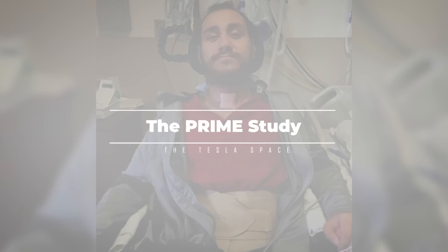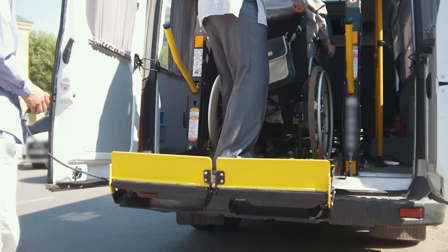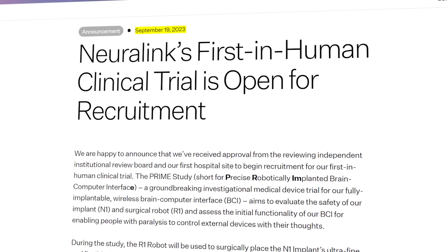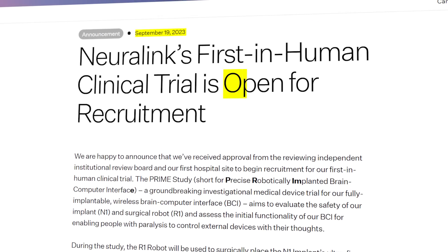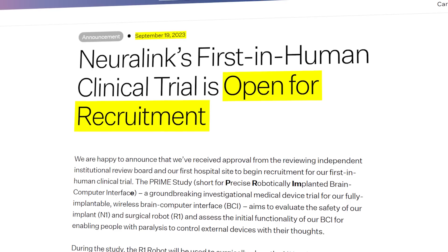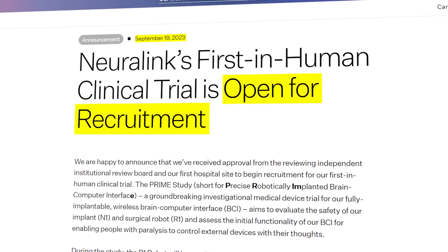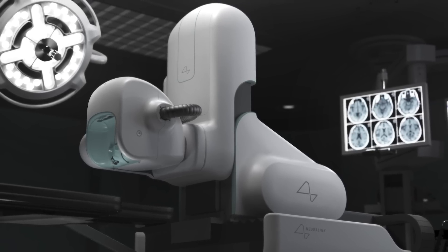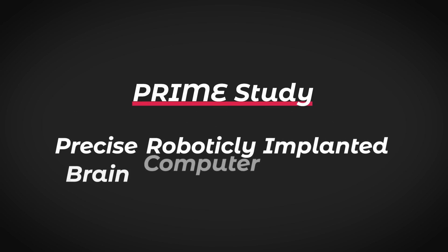Nolan might be the first human Neuralink user, but he definitely won't be the last. For all we know, there could be more people like him already. In September last year, Neuralink announced that they had started recruiting for the first human test subjects for the N1 brain-computer interface and R1 surgical robot that will be used to implant it. The prime study, short for Precise Robotically Implanted Brain-Computer Interface, aims to above all determine the safety of both the implant and the robot for human application.